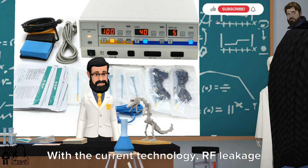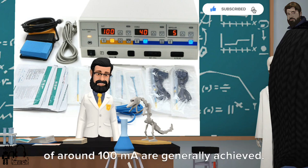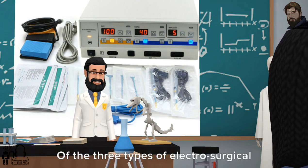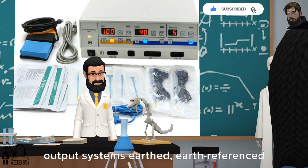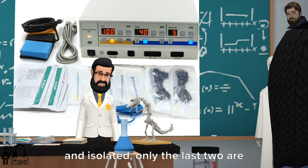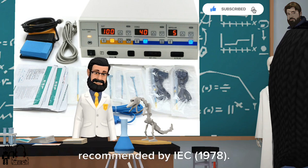With the current technology, RF leakage of around 100 mA are generally achieved. Of the three types of electrosurgical output systems (earthed, earth referenced, and isolated), only the last two are recommended by IEC 1978.